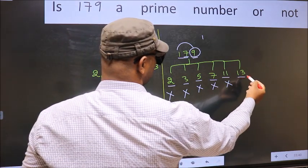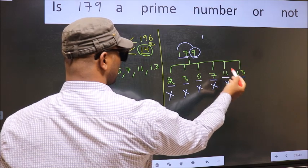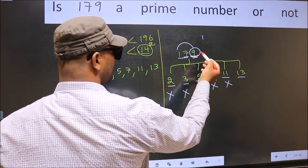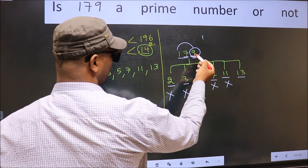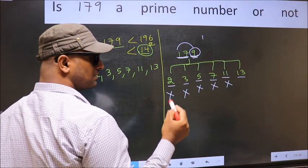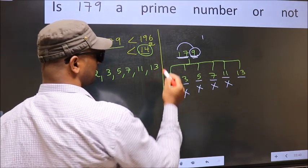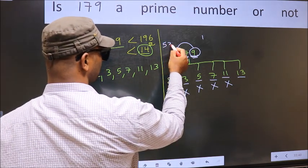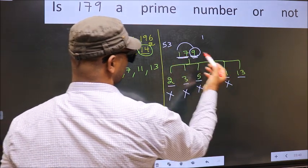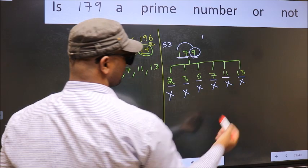Next, number 13. To check divisibility by 13, last digit you multiply by 4: 9 into 4, 36. Add to 17: 36 plus 17, we get 53. 53 is not divisible by 13, so this number is also not divisible by 13.